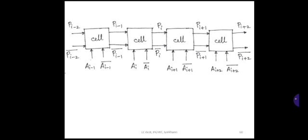Such cells can be cascaded to form the complete parity generator. As you can see from the figure, this is a cascaded form of a parity generator. Each cell takes p(i-1), p(i-1) bar, ai, and ai bar as inputs and produces pi and pi bar as outputs. Adjacent cells connect so that p(i-2) feeds into the next cell, and p(i+1), p(i+1) bar are the outputs of the following cell.